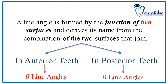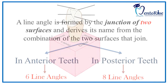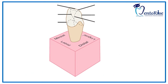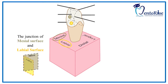Let's see how these line angles are formed and how we name them. Let's deal with the line angles of the anterior teeth first. A line angle is formed by the junction of two surfaces. Taking two surfaces into consideration — the mesial surface represented in grey and the labial surface represented in yellow — their junction forms a line angle called the mesiolabial line angle.